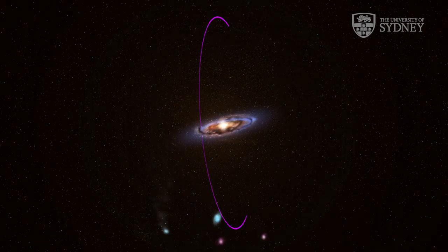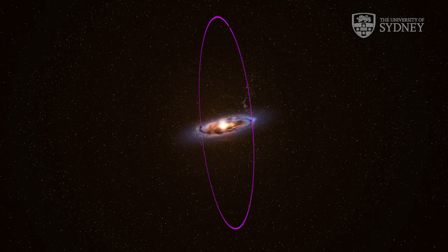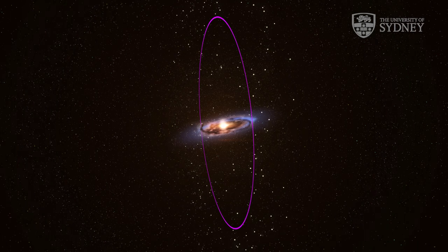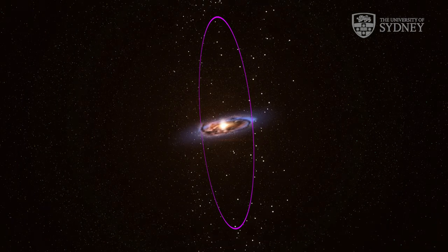Andromeda consumed incoming galaxies, shredding them to form orbiting star clusters. Stars from the first epoch, up to 10 billion years ago, formed a distinct orbital axis.